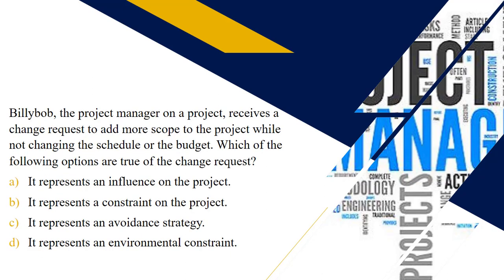Billy Bob, the project manager, receives a change request to add more scope to the project while not changing the schedule or the budget. Hopefully you selected A — it represents an influence on the project. Change requests, scope creep, and interactions between constraints are some of the influences that can impact a project.